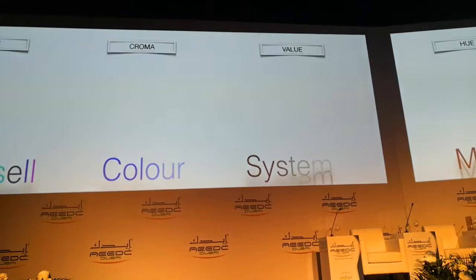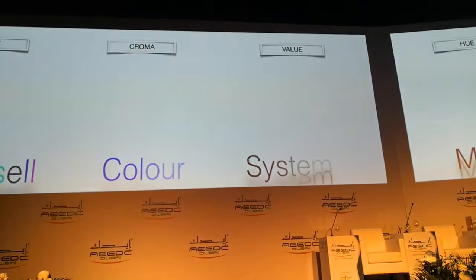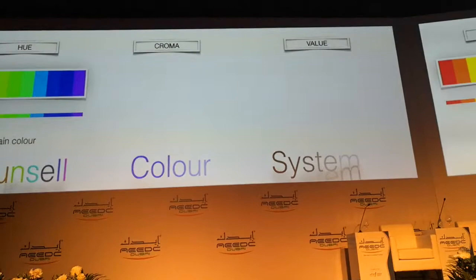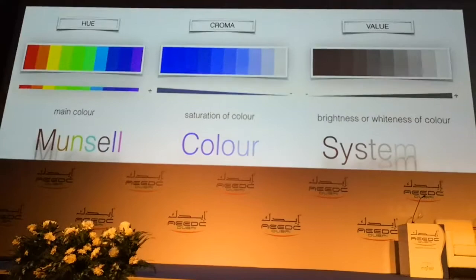Why is this important for us? Because when we want to create something — when we want to design the color of our restoration — the hue is the main color, the chroma is the saturation of the color. According to this color system, the value is the brightness or the whiteness of the color.